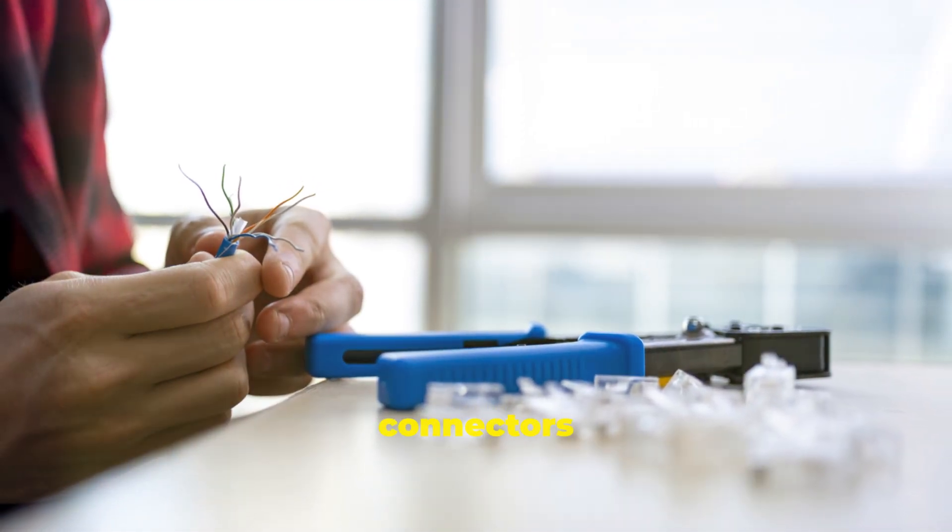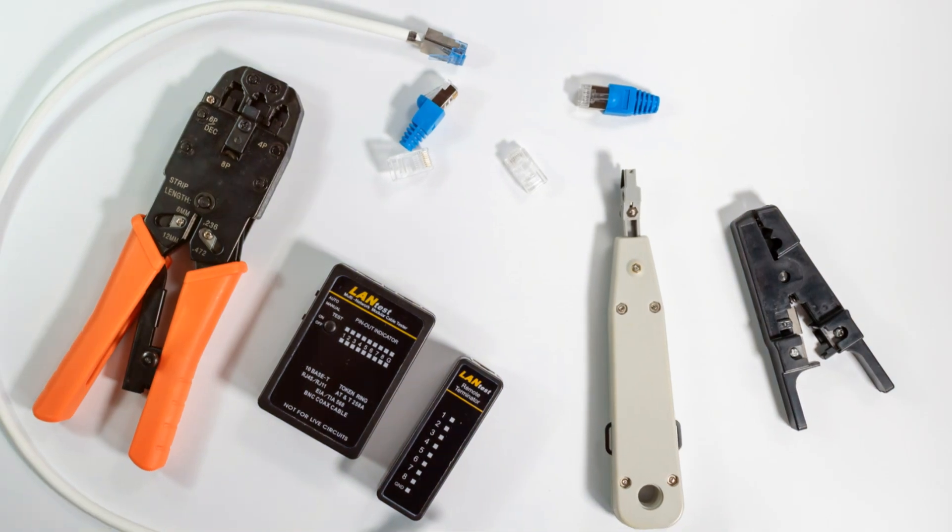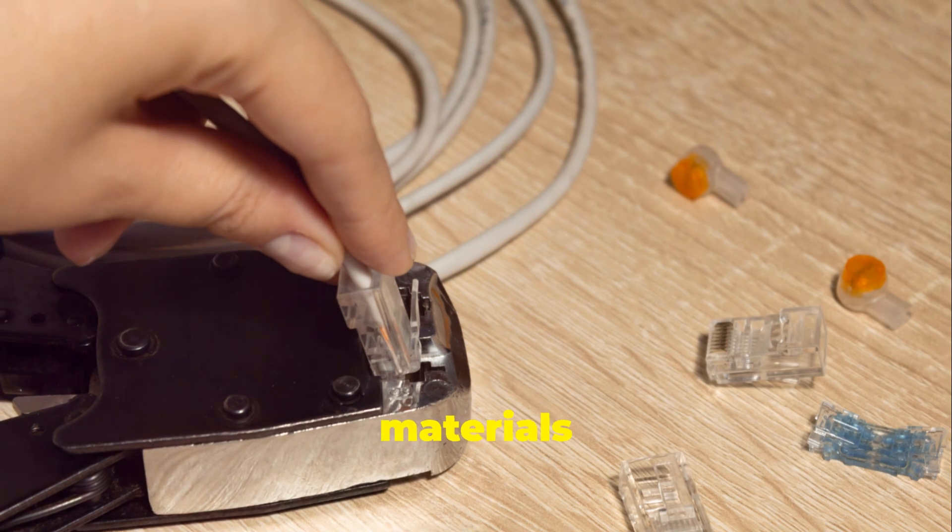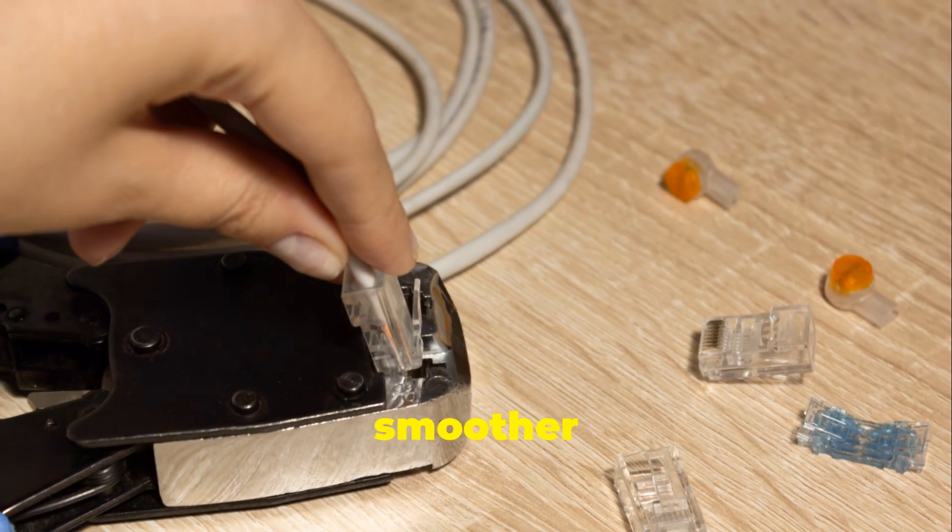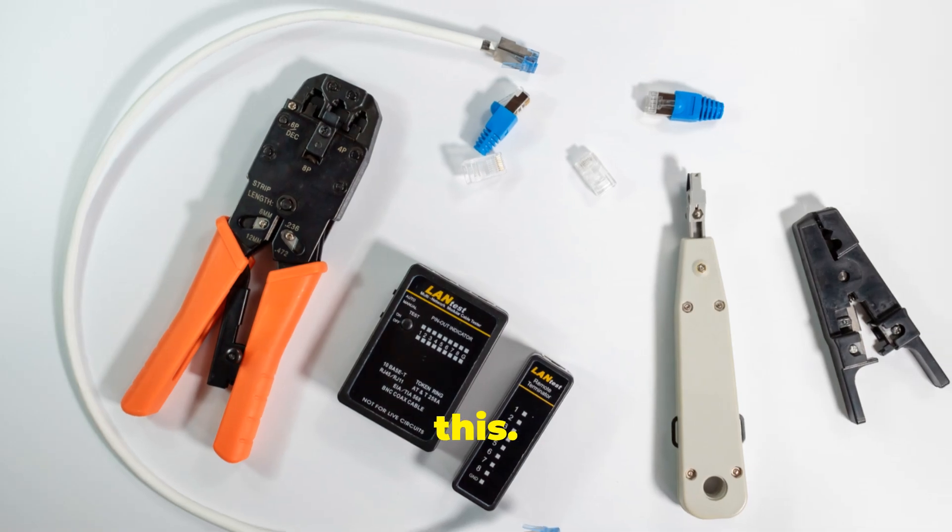Before we start crimping, let's gather our gear. Having the right tools and materials on hand will make the process smoother and more efficient. Don't worry, you won't need a fancy tool kit for this. Here's what you'll need: just a few essential items that you might already have or can easily get.